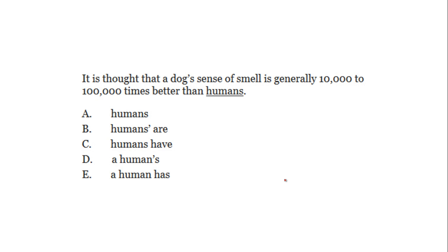Now we're going to work on four official SAT practice test problems. I'm going to show you how to identify illogical comparisons and how to revise them. First problem: 'It is thought that a dog's sense of smell is generally 10,000 to 100,000 times better than humans.' Notice the word 'than' — it indicates a comparison. What is being compared? Smell to humans, to people, which doesn't make sense.